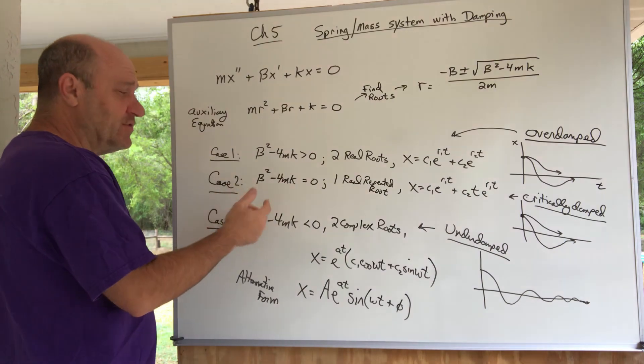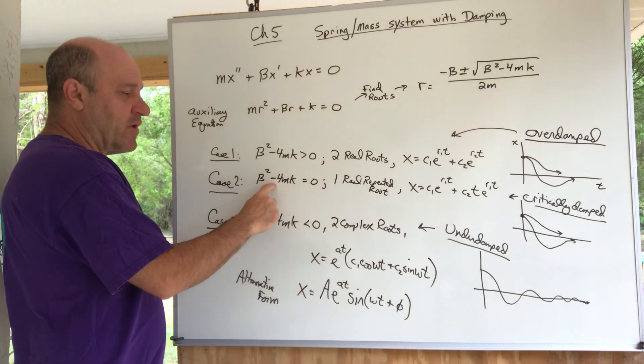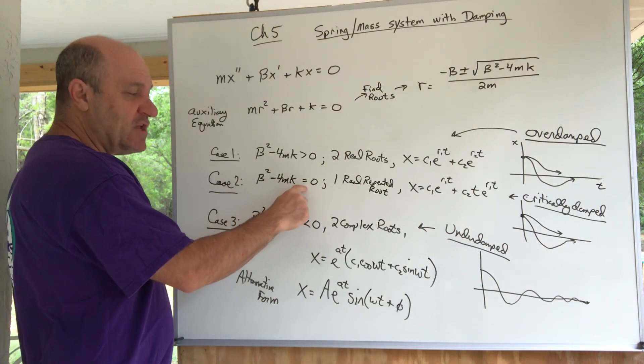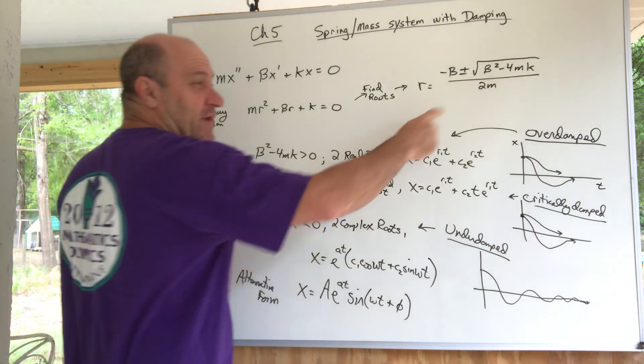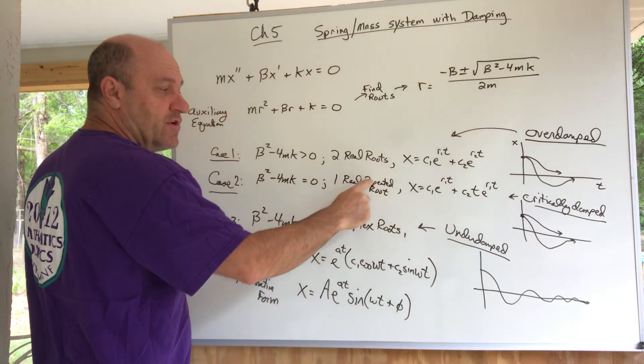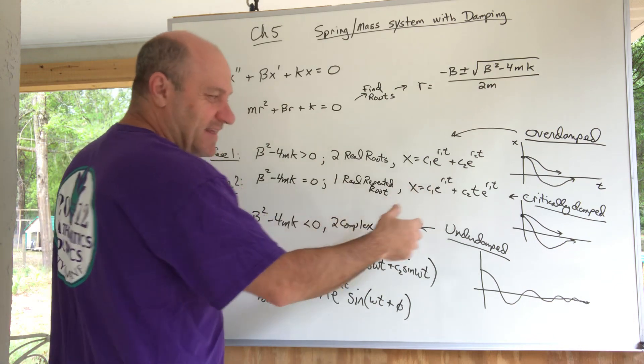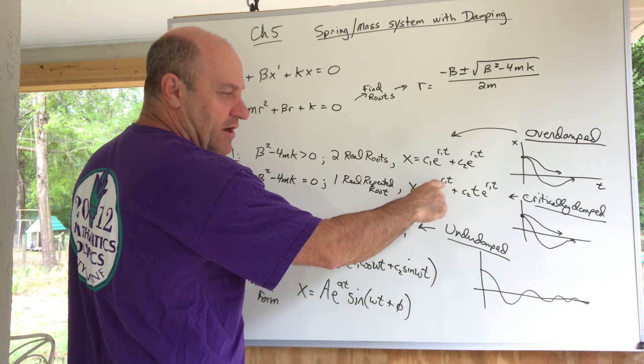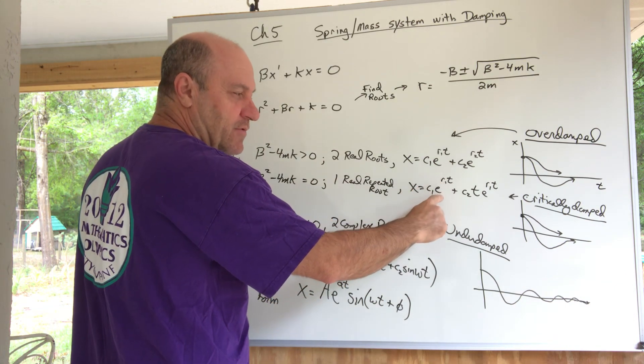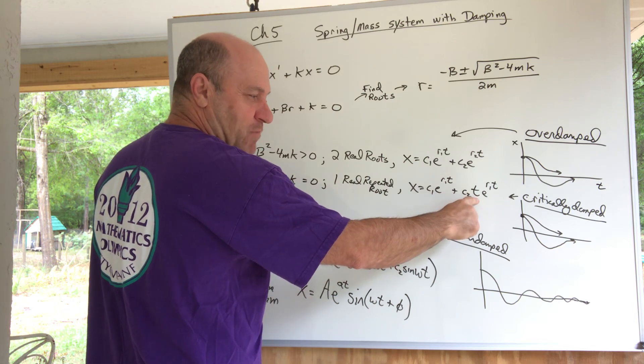Another case, case two, is beta squared minus 4mk equals zero. When that discriminant equals zero, you get one real repeated root, and that's called r1. You know what to do with a repeated root—we have to multiply by this t here on the second term.